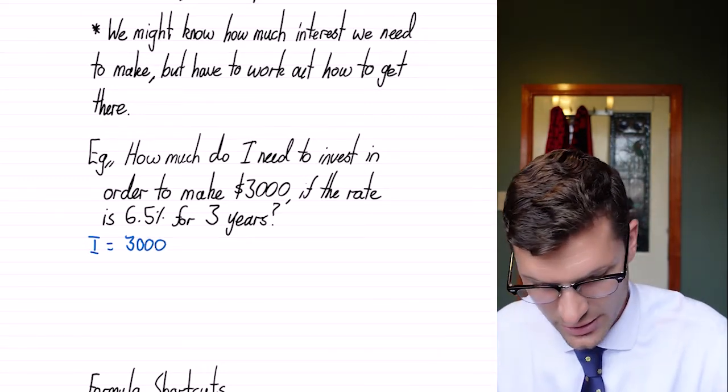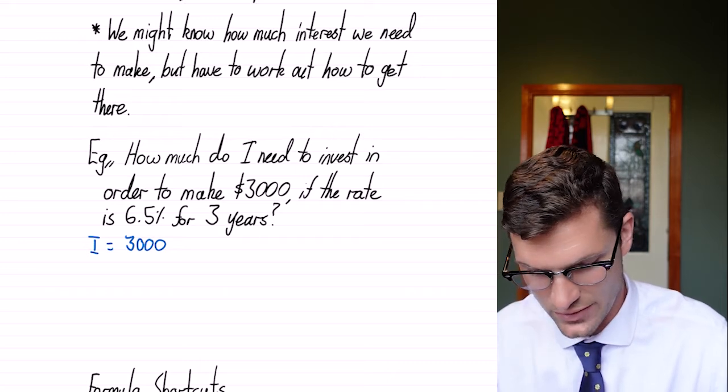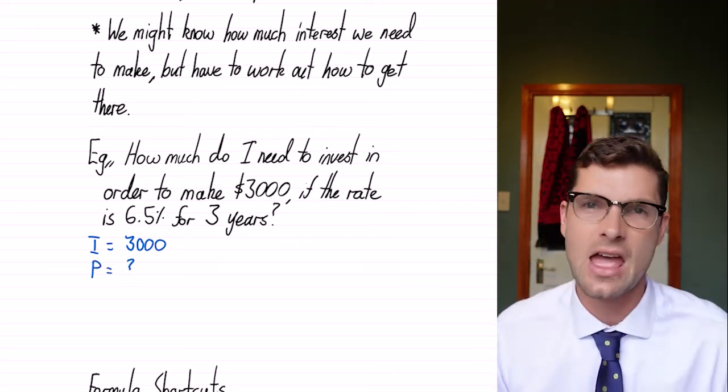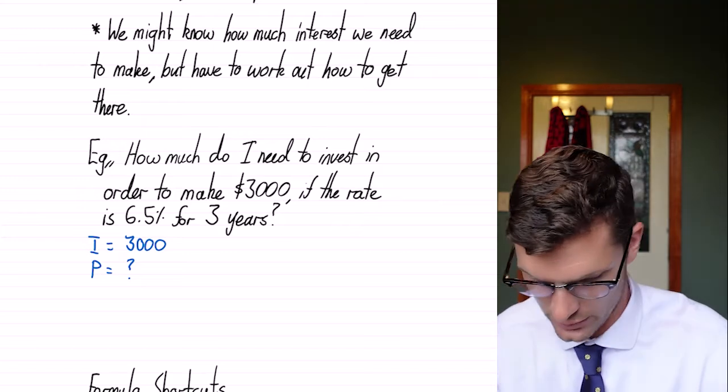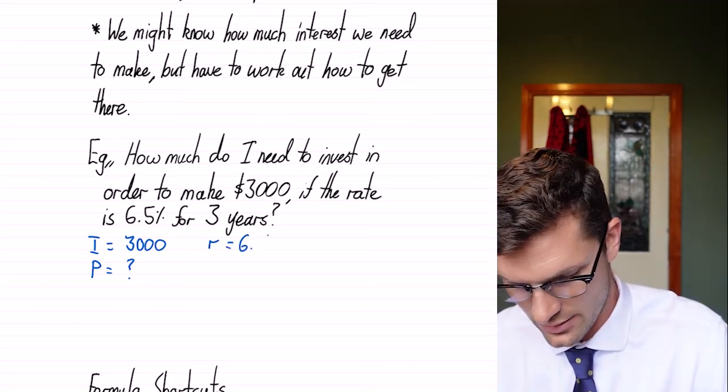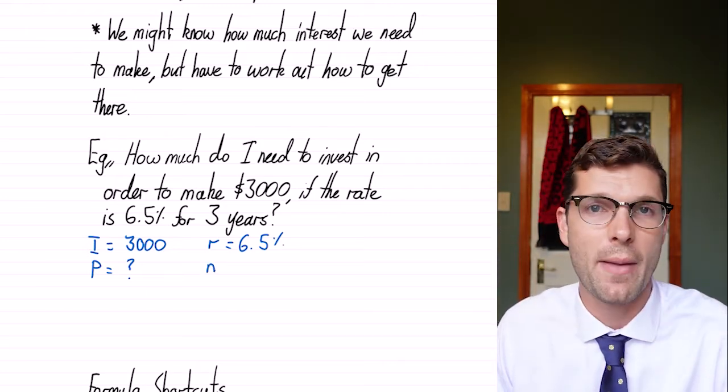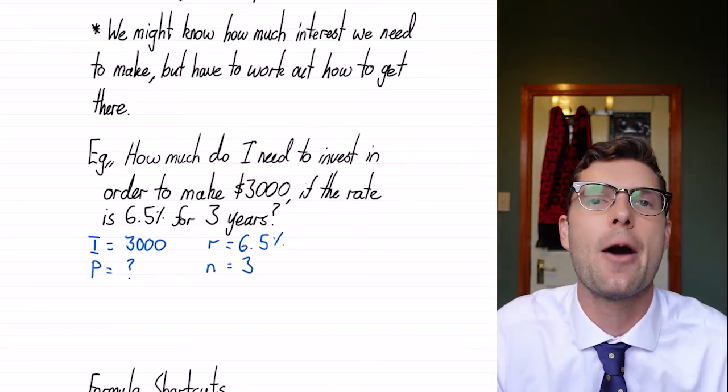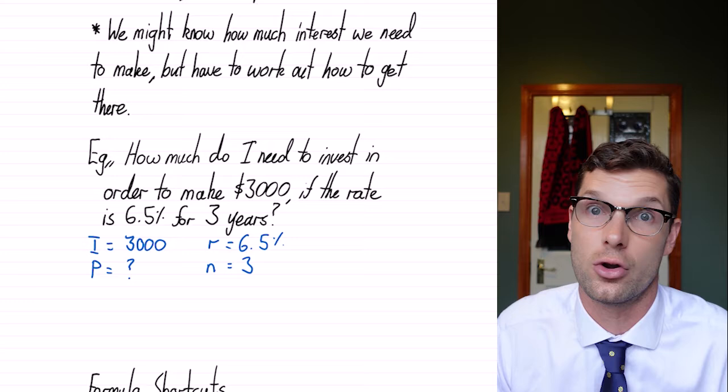We've gotta work out how much money do I need to put in. So for this, that's our unknown. And we've also been given the rate and the time period. So R is equal to 6.5%, and our N is equal to three years. So we wanna make three grand in three years. How much money do I have to put up in order to do that?